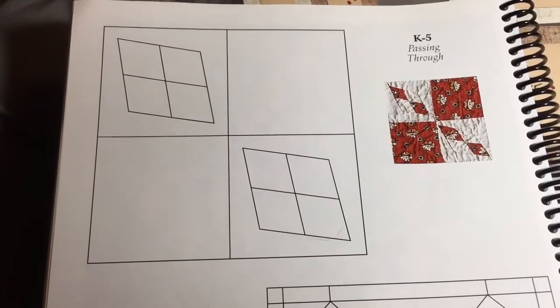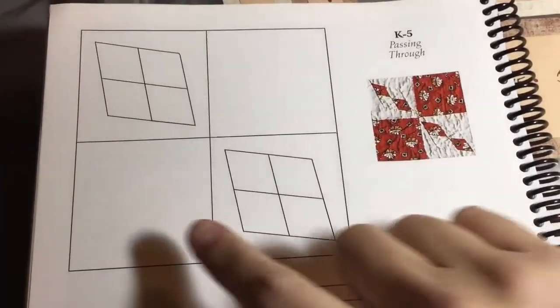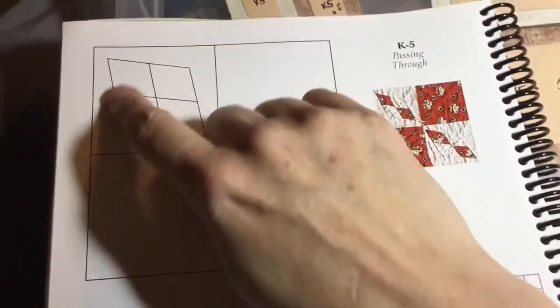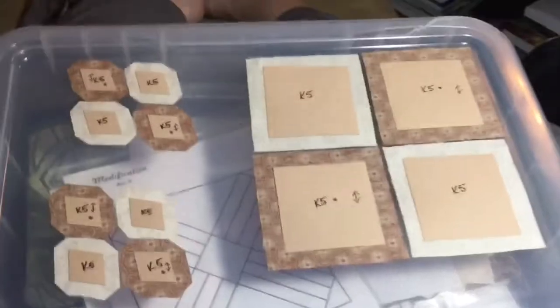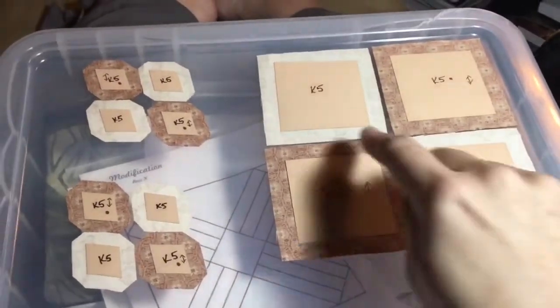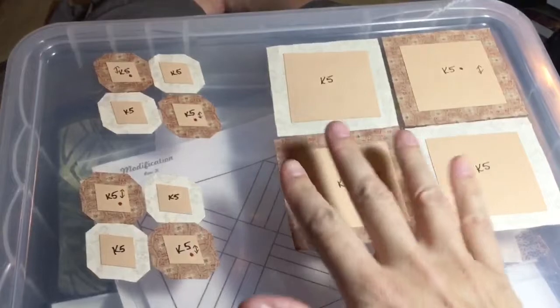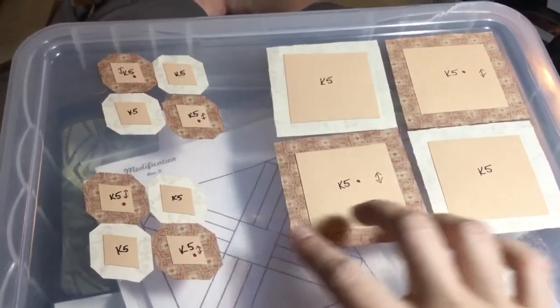K5 has just four different sections and then these diamonds are assembled and appliqued on, so it's really quick. I'm going to base these squares opposite from each other, so I'll base the sides and then the top and bottom of this one.